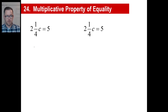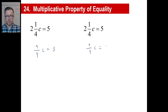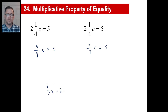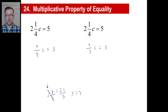On this one, the first thing I do is rewrite this as an improper fraction: 9 fourths c equals 5. Here's a general rule: if you have an equation like 3x equals 21 and the coefficient of x is an integer, just divide by the integer on both sides — 21 divided by 3 is 7, you solve it. If it's a fraction, multiply by the reciprocal. A lot easier that way.